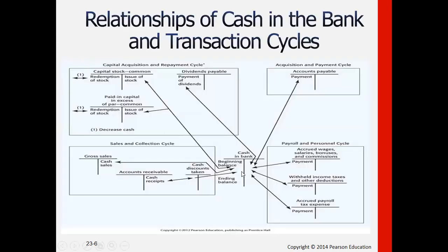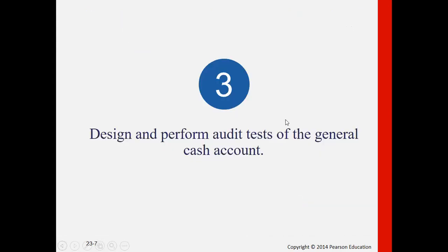Cash in bank, whether on the debit or credit side, is affected by the various cycles. Debits normally arise from all items involving collections or receipts — for example, collections of accounts receivable from credit sales and collections from cash sales. For payments, we look at the acquisition and payment cycle for accounts payable, long-term liabilities in the capital acquisition and repayment cycle, and payroll for salaries, expenses, accruals, benefits, commissions, and taxes payable.